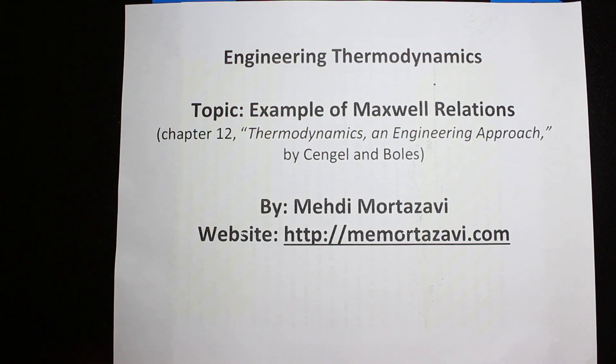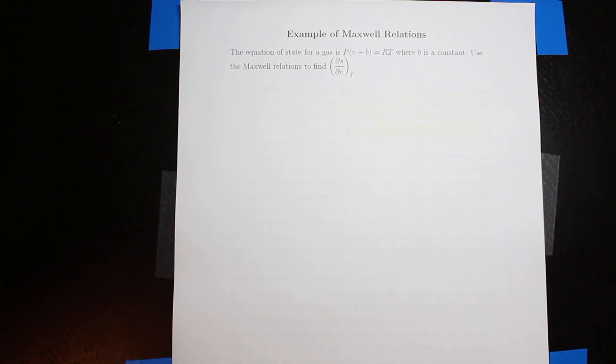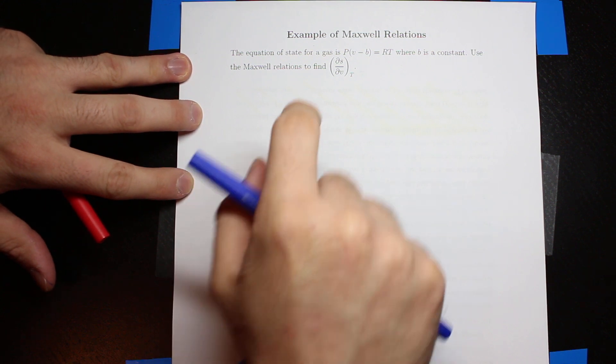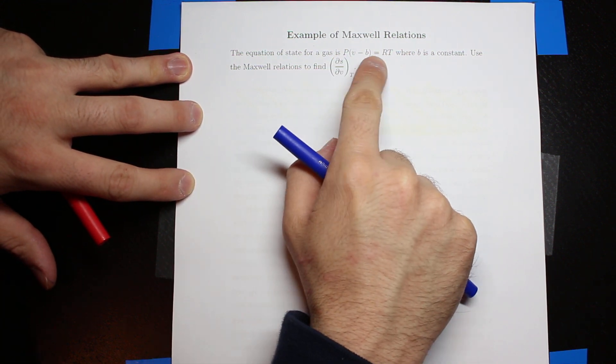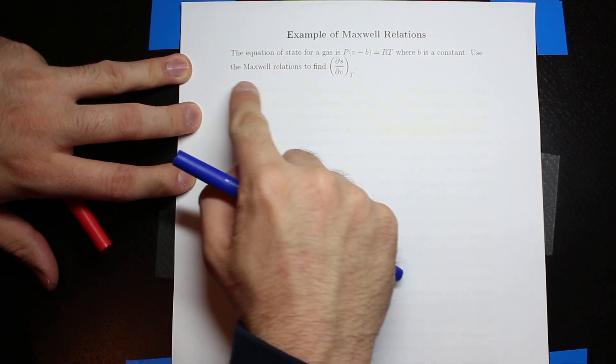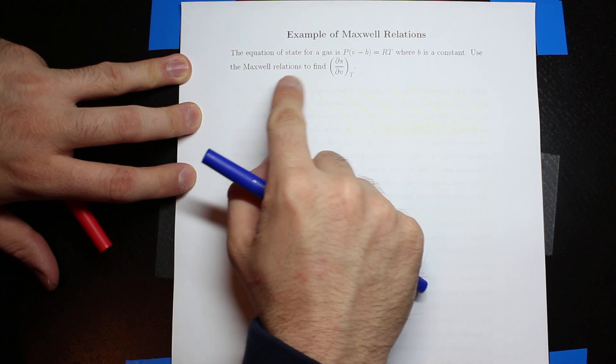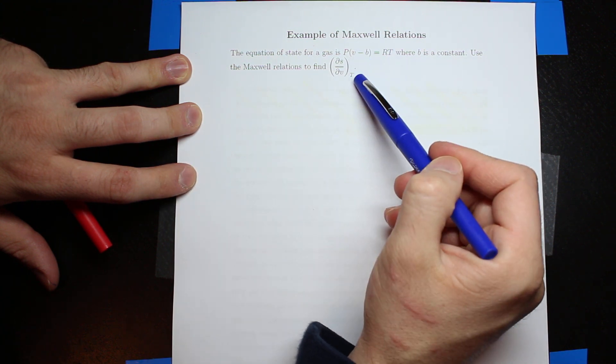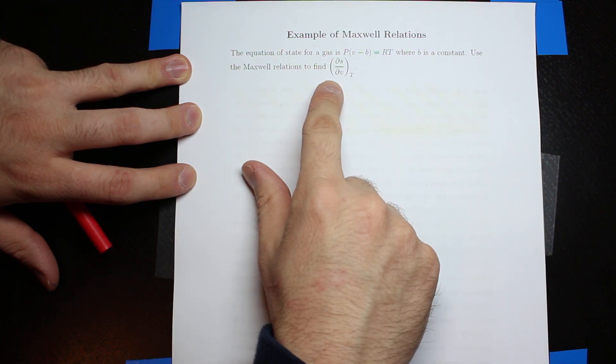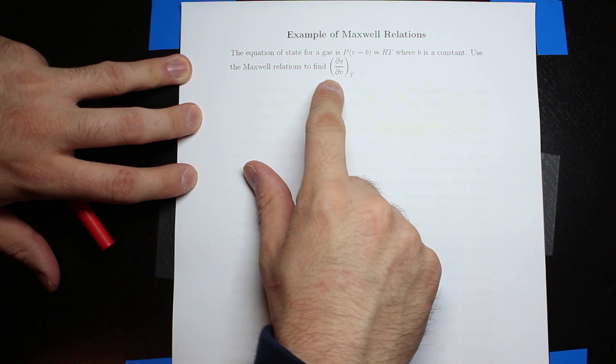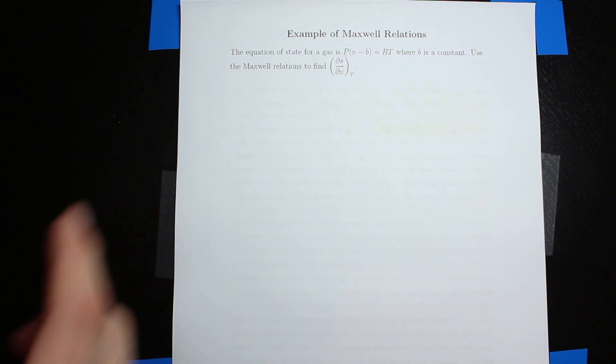Okay, so let's do one example for Maxwell relations. In this example, the equation of state for a gas is given, and the question is asking to find ∂S/∂V when the temperature is constant by using one of the Maxwell relations.